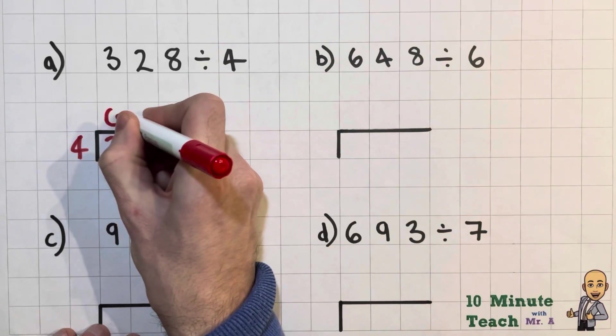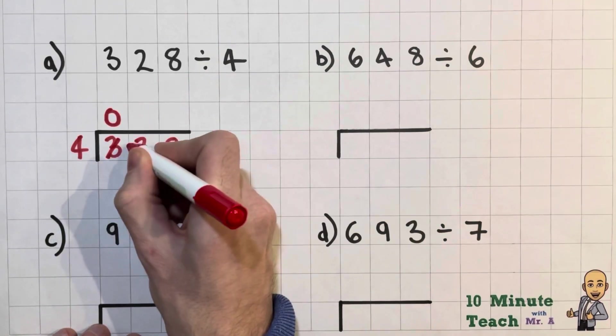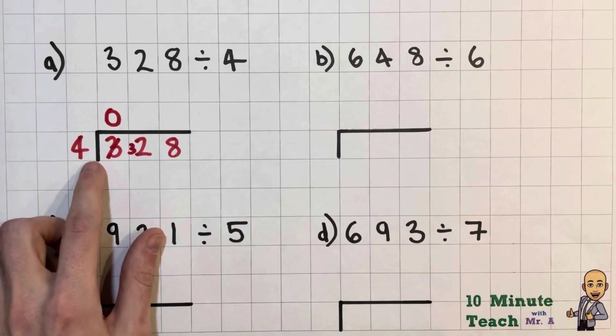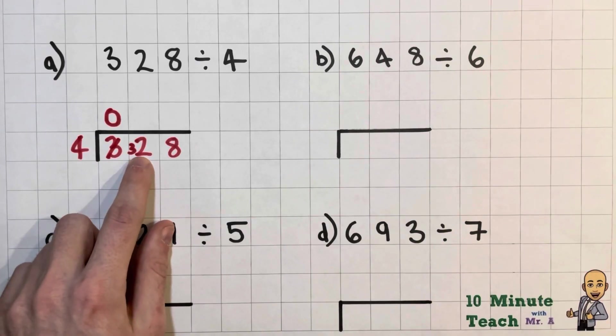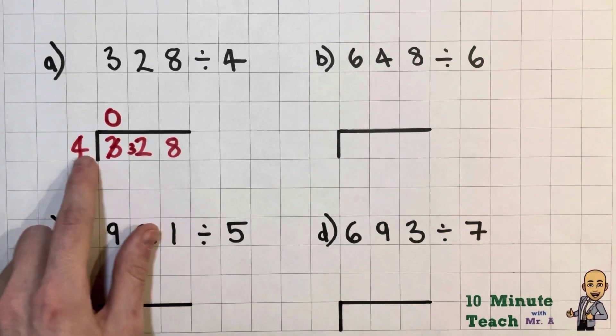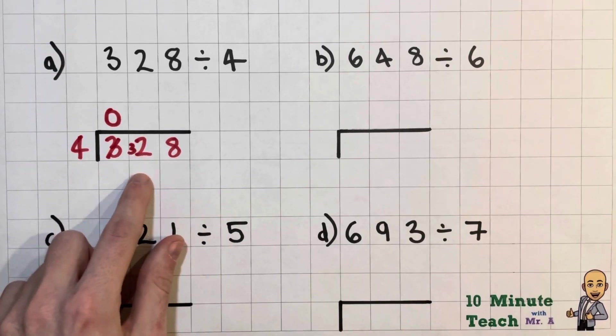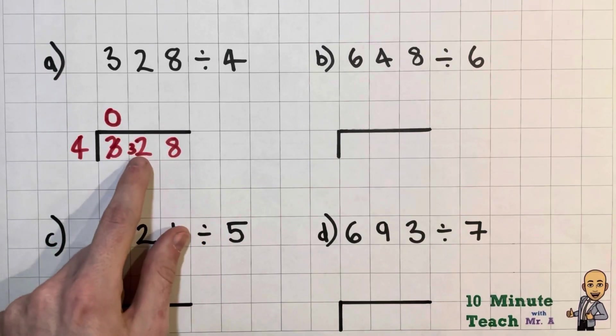So what I shall do is put zero in there. I'm going to move my 300 to make 320 over here. So how many fours can I fit inside this 320? But actually to make it easy for ourselves we could make it 32.